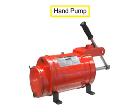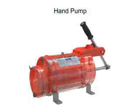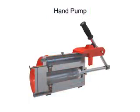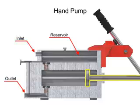Hand pumps are used when a source of power is not available or where the extra expense of a power pump isn't warranted. For example, they are used on shop presses and other portable equipment, serve as standby pumps, and serve as sources of emergency power. Hand pumps are always of piston type and are usually constructed with a piston working between two check valves.